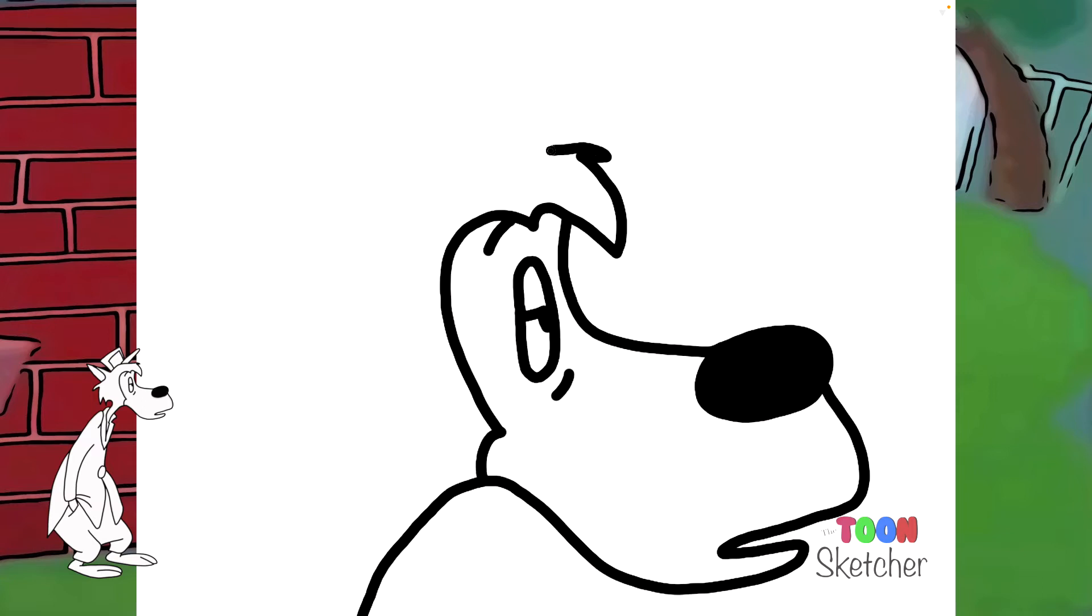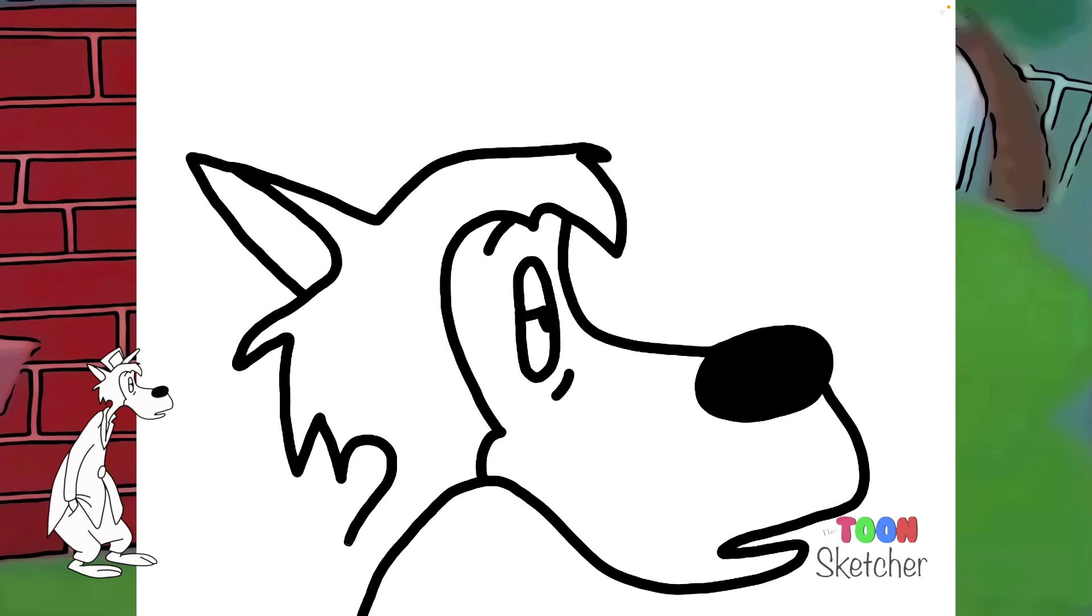All right. There's his ear right there. This is his right ear. We're going to create his inner ear. Connect that and he's got some hairs down here. Back of his head. There we go.